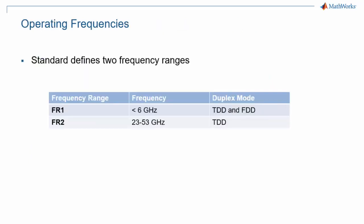The standard distinguishes between two different ranges for carrier frequencies, calling them Frequency Range 1 and 2, or FR1 and FR2. Those two ranges correspond to very different propagation conditions, and some physical layer settings only apply to one of those modes. This is the case of subcarrier spacing, as we will see in another episode of this series. This concludes this introduction to 5G, the first part of this 5G Explained video series.